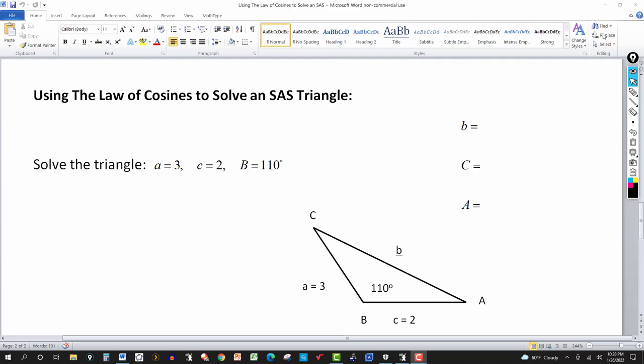In this video we're going to solve a triangle where two sides and the included angle are given. It's called SAS, side-angle-side. So I have the triangle here. B is given to be 110°, so that's an obtuse angle. We know therefore the other two angles have to be acute.